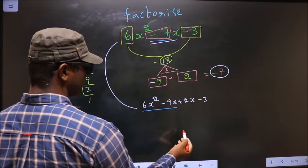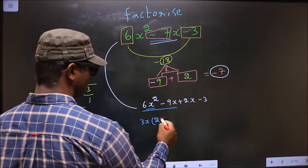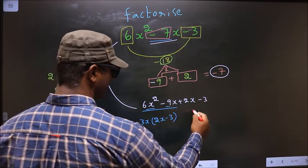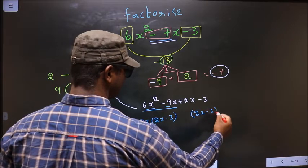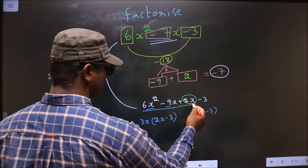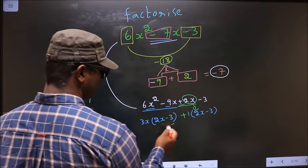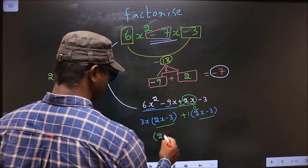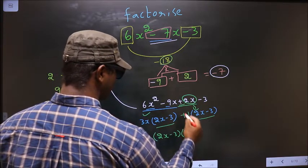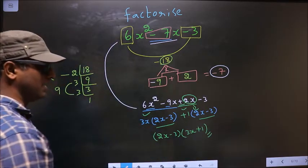From these 2 terms what can be taken out common is 3x. So here you get 2x and here you get minus 3. Whatever you have got here, here also you should get the same thing. Now from this, 2x has gone inside, so outside you are left with plus 1. Now you take out 2x minus 3 common. So here you have 3x and here you have plus 1. This is our answer.